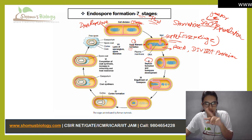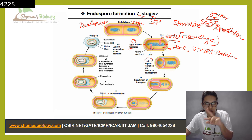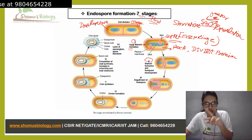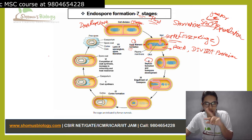Before that, remember dipicolinic acid (DPA) and Ca²⁺? The mother cell has both of these and is going to give them to the endospore so it can save itself and carry on. So calcium and dipicolinic acid are given by the mother to the spore. The mother cell gets burst and the spore comes out as a free spore — with a core, cortex, coat, and exosporium.